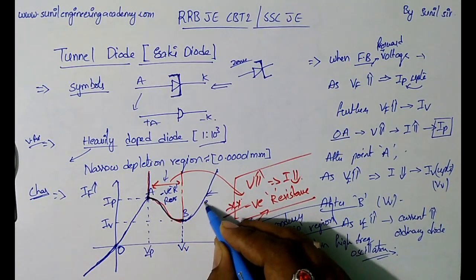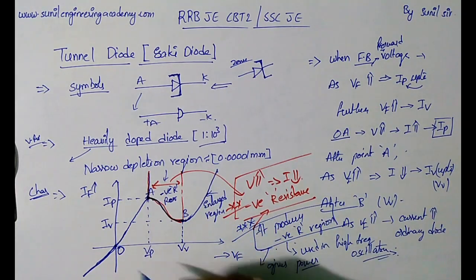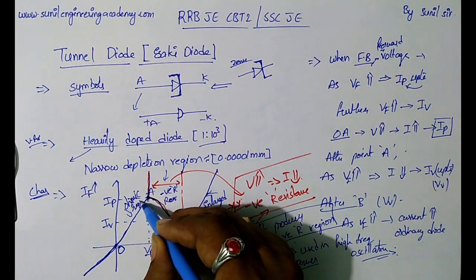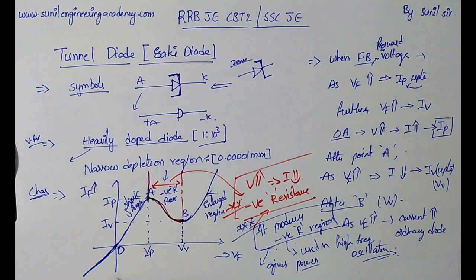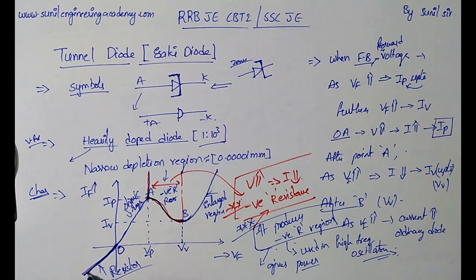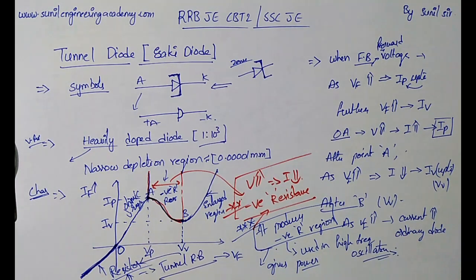The region before point A is called the tunneling region. The region after point B is the ohmic region — as voltage increases, current also increases normally. In reverse bias, the tunnel diode acts as a resistor, meaning as voltage increases, the current also increases linearly. So in reverse bias, it acts as a resistor.